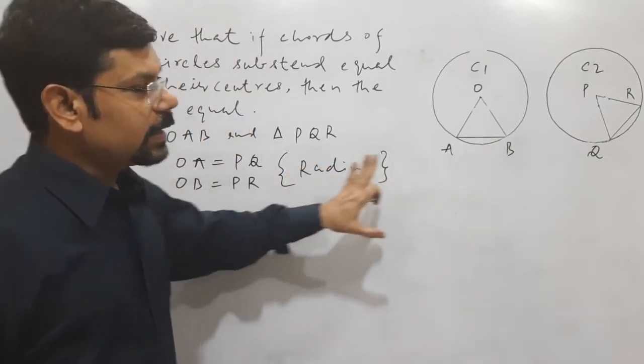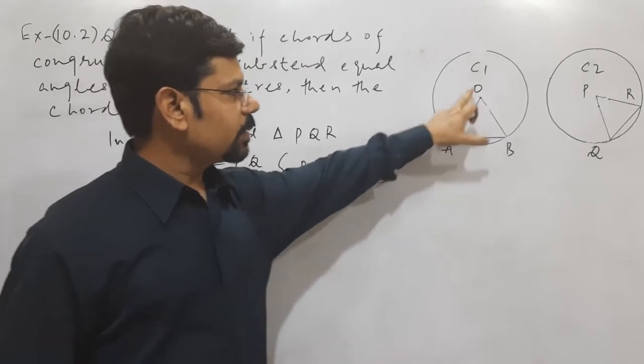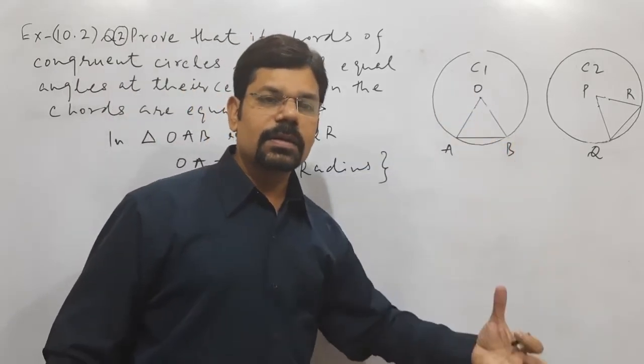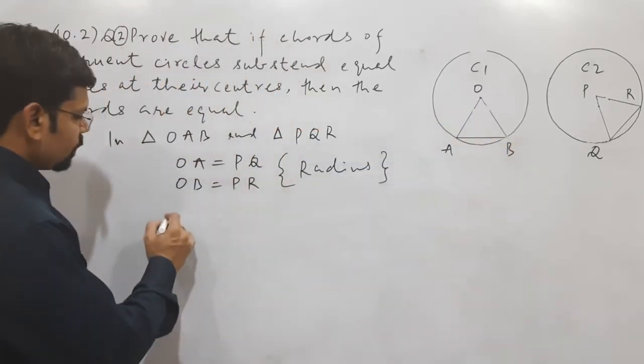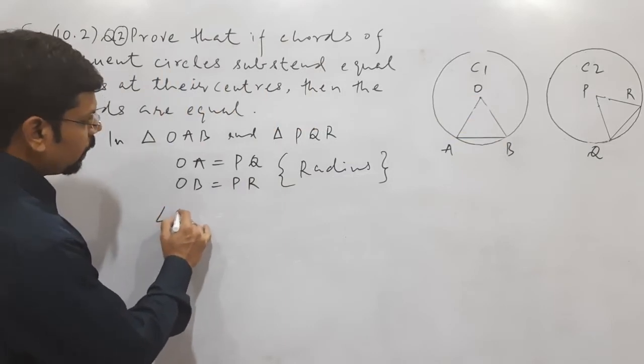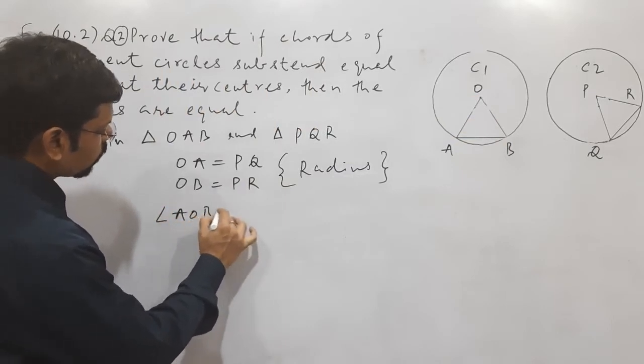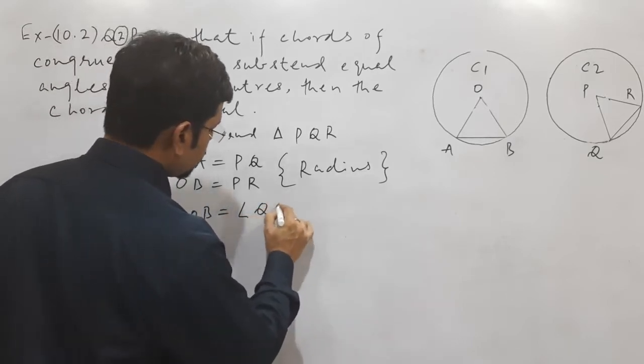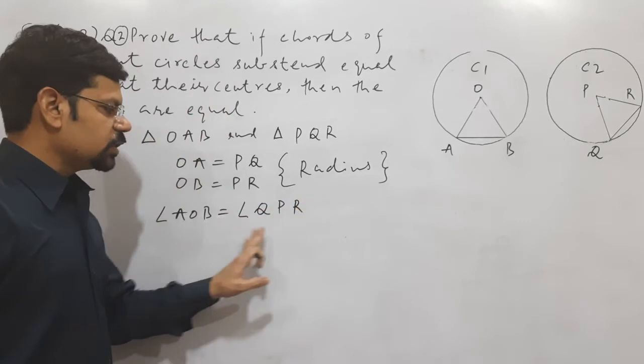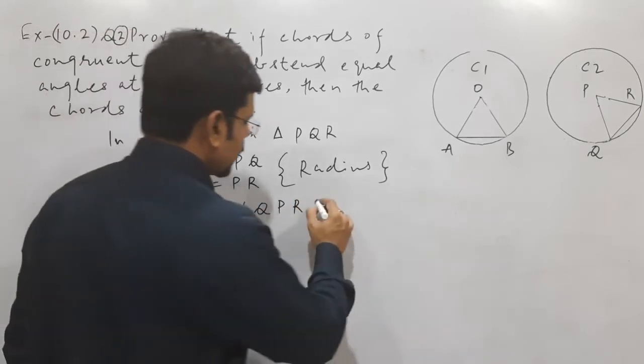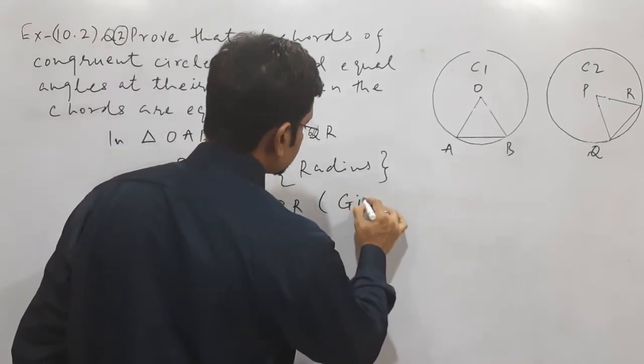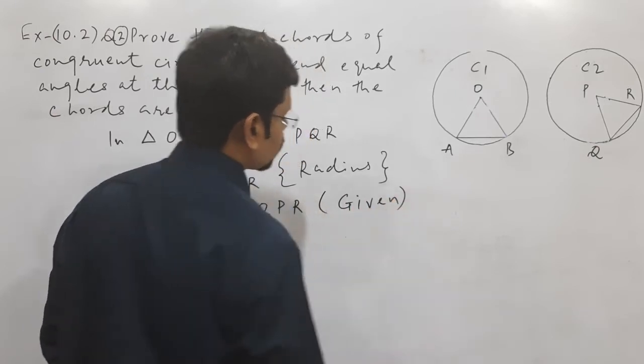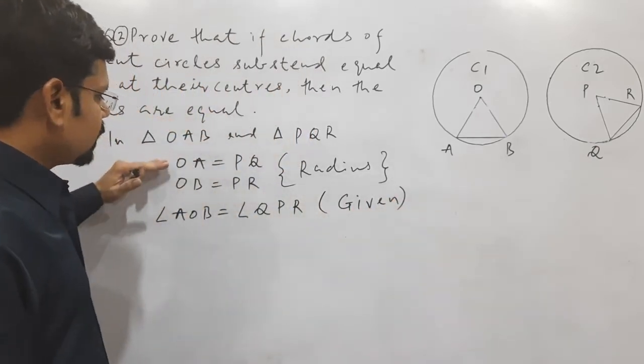Now after that, here in this question it is given that angles are subtended at center that are equal. It means angle AOB equal to angle QPR. These two angles are equal as it is given.